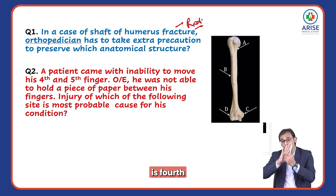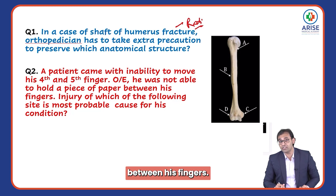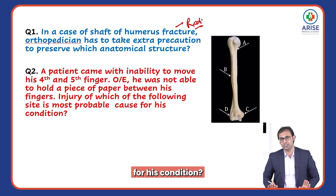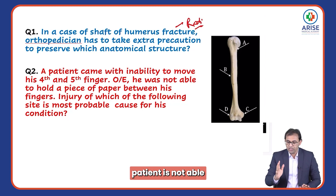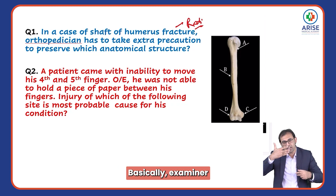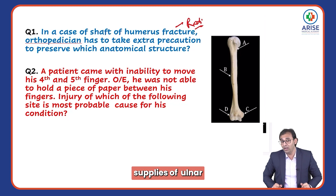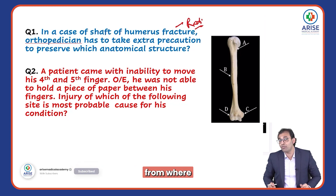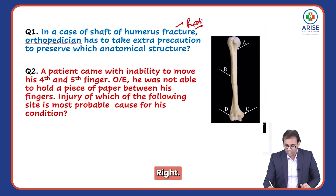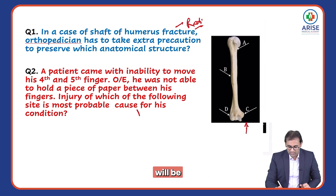Second question: a patient came with inability to move his fourth and fifth fingers; on examination he was not able to hold a piece of paper between his fingers — this is the card test. This is a case of ulnar nerve injury. Out of A, B, C, D, the ulnar nerve passes from the medial epicondyle, so the answer will be C.